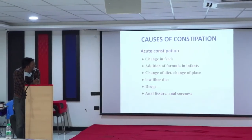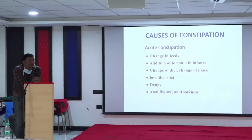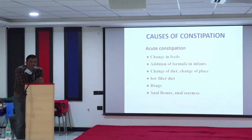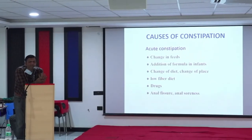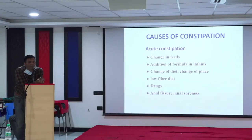Causes of constipation include: change in feeds or formula in children, change in diet with different ingredients, not drinking enough water, low fibre diet, and too much milk ingestion. If a child drinks more than half a litre to 750ml of full fat milk a day, they tend to get constipated. Too much chocolate, too much fat, too much ghee, butter, bakery items, and milk all have a negative effect on intestinal motility. Fibre, on the other hand, swells up in the intestine, holds on to water, bulks up the stool, and helps you go to motion.